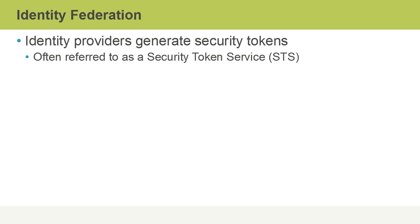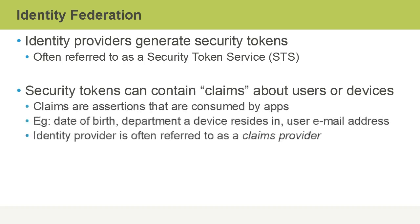Identity providers generate security tokens. This is often referred to the specific component on the identity server as a security token service, or STS. Security tokens can contain claims about users or devices. Claims are assertions that are consumed by apps — examples might be a date of birth, the department a device resides in, a user's email address, and so on. The identity provider is also often referred to as a claims provider as a result of this.